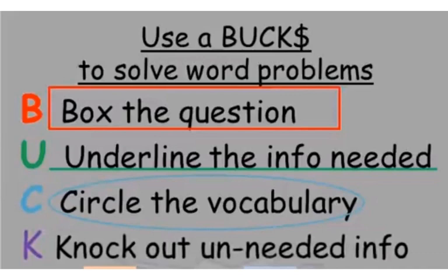There are certain terminologies used and we need to understand what exactly they are saying, so we circle those. Then finally, we knock out the unneeded information. Some information is given as a decoy to lead us in the wrong direction, but we are smart kids, so that won't trick us.